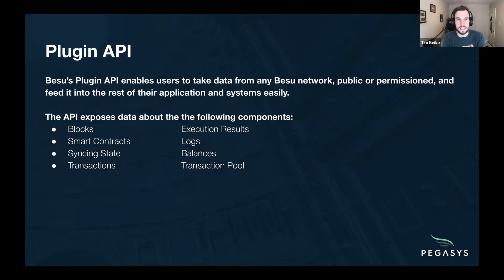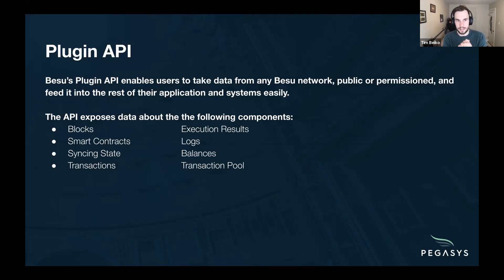Some of the data exposed by the API today includes everything related to blocks — the block data as well as their execution results, what happens once the block is processed. Everything related to smart contracts, their execution, the code, and the logs. Things related to the syncing state of your client as it joins the network, the balances of accounts and contracts. And finally, everything related to transactions — whether it's the transactions themselves, their execution on the chain, or the transaction pool — when transactions are added and removed from the pool.